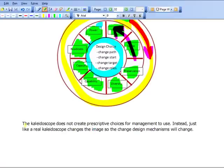Almost in conclusion of the change kaleidoscope, we say down here: the kaleidoscope does not create prescriptive choices. It does not tell us what management has to do. Instead, just like a real kaleidoscope changes the image, the change design mechanisms will change. What this is saying in quite a sophisticated way is it depends. The way of dealing with change is it just depends.